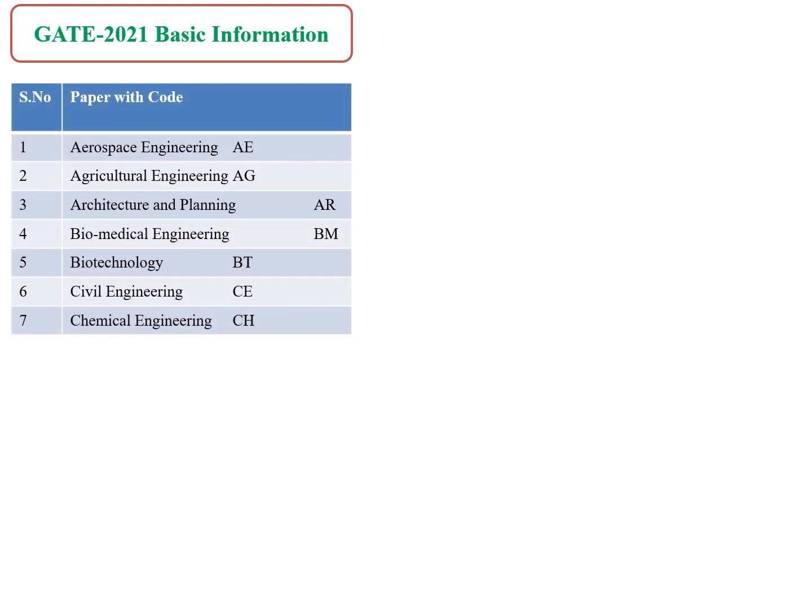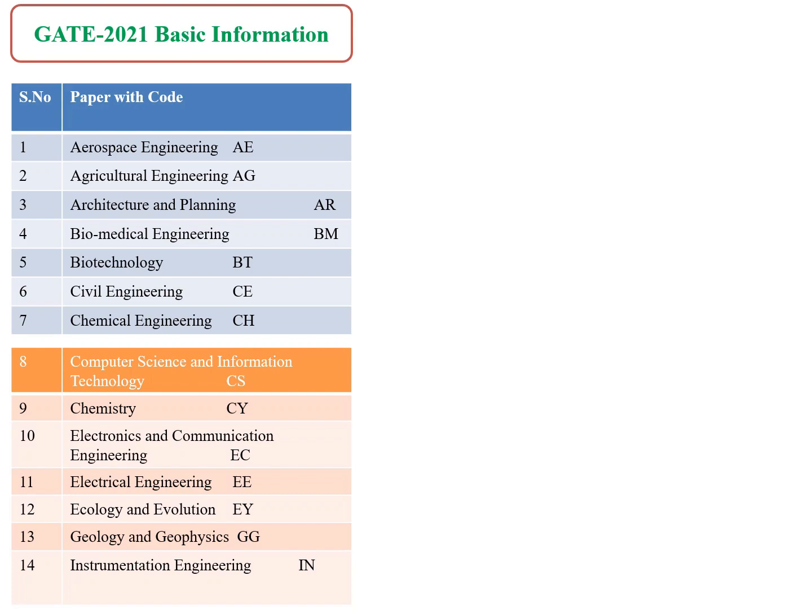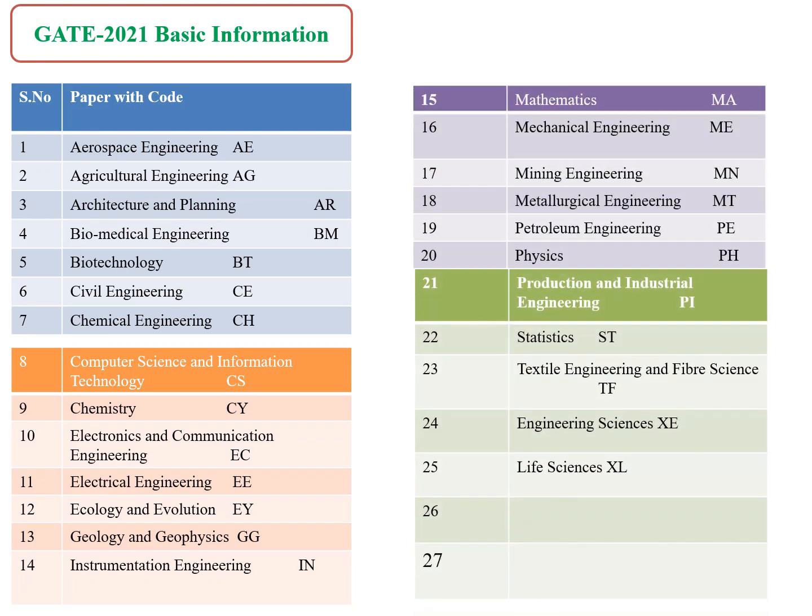Till 2020, they had only 25 papers for writing the GATE. These are the 25 papers I have listed. This is the paper name and this is the paper code. In every paper they have a certain paper code, and I have written those paper codes here for every paper.